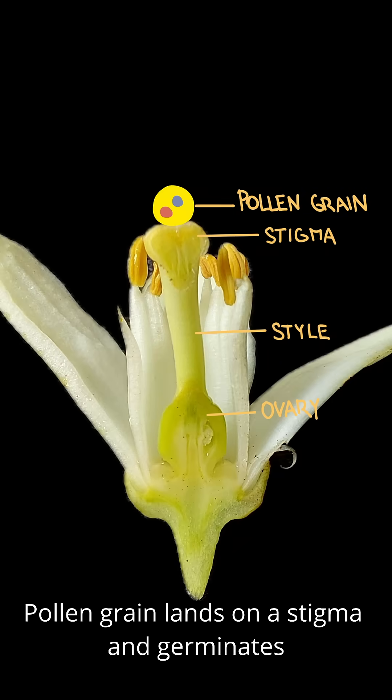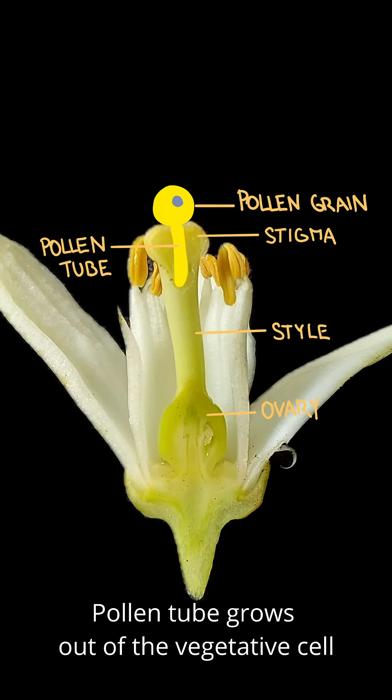Under suitable conditions, the pollen grain starts to germinate after landing on a stigma. This happens by production of a pollen tube from one of the two cells the pollen grain contains — the vegetative cell. The pollen tube grows down through the style towards the ovary.